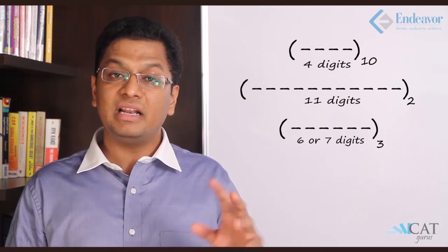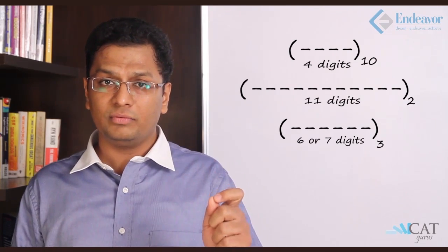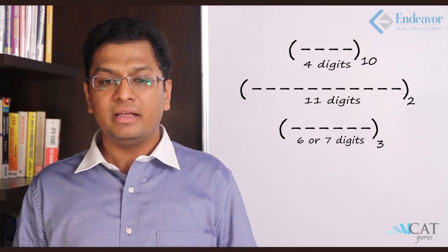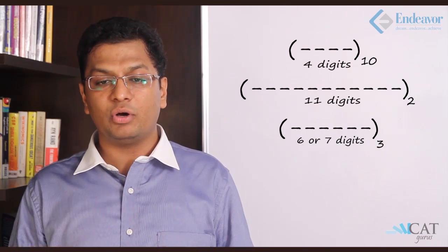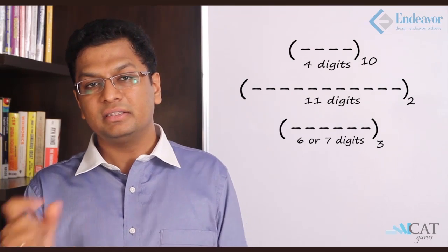An important observation: the smaller the base, the more digits needed to represent the same quantity. So a 4-digit decimal number becomes an 11-digit binary (base 2) number, and a 7-digit base-3 number. The larger the base, the fewer digits are required. Having understood the base system, it will now be easier to convert numbers from one base to another.